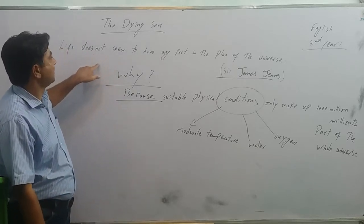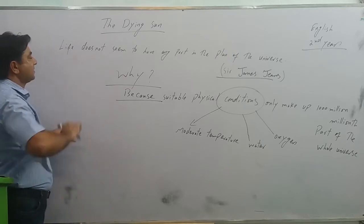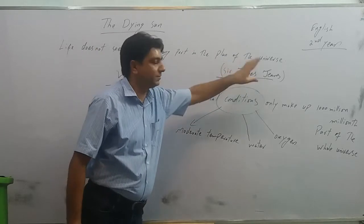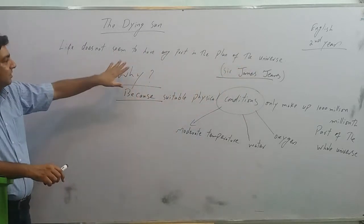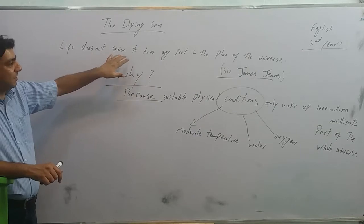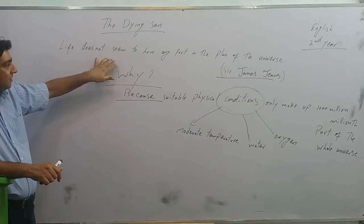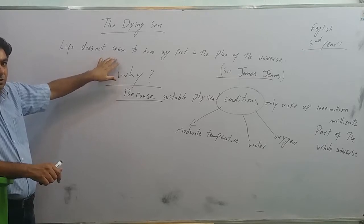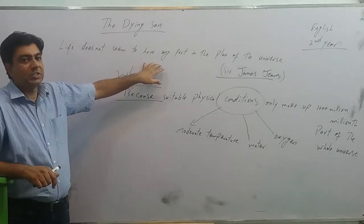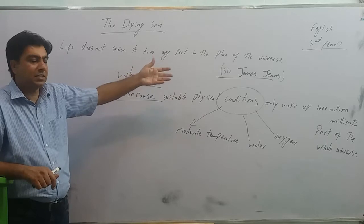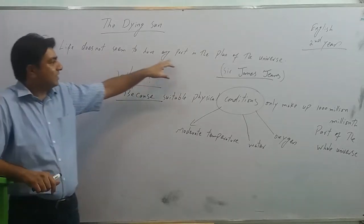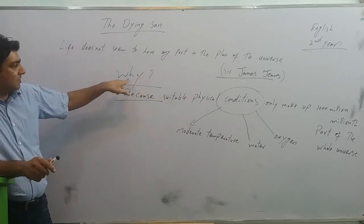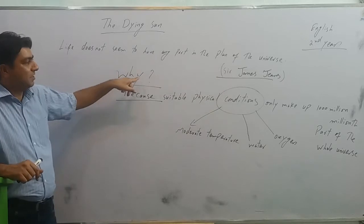In this essay, at one place Sir James Jeans says life doesn't seem to have any part in the plan of the universe. Sir James Jeans says life does not seem to have any part in the plan of the universe. Why? Why did he say this?